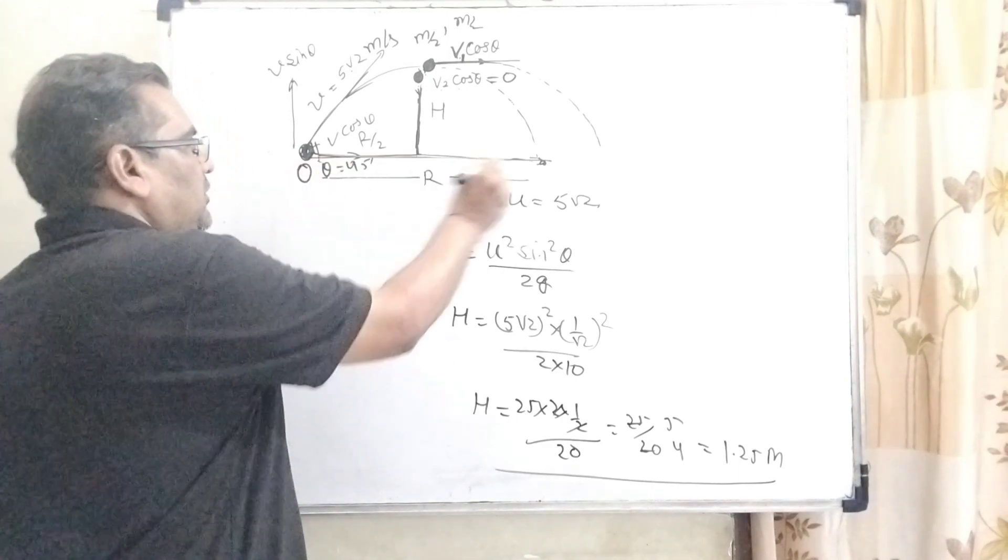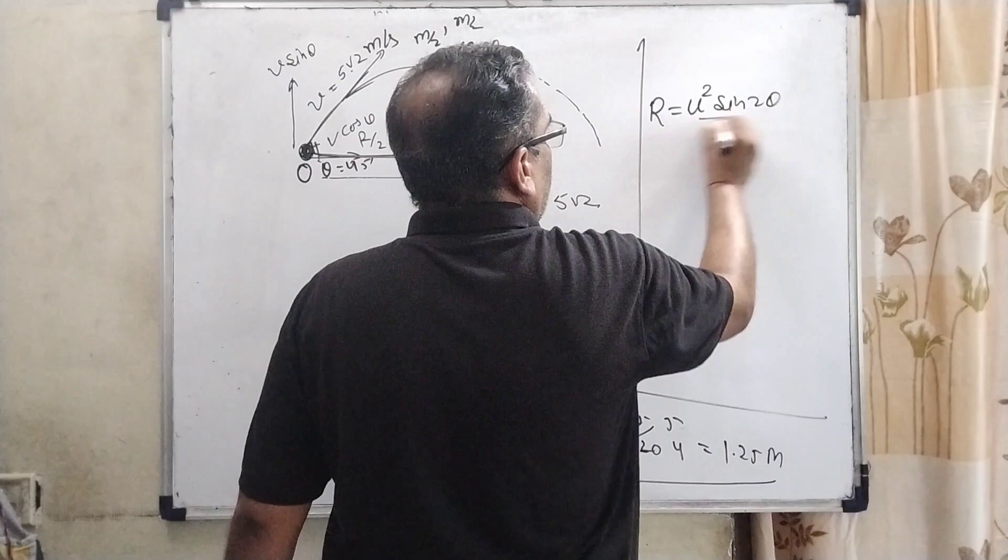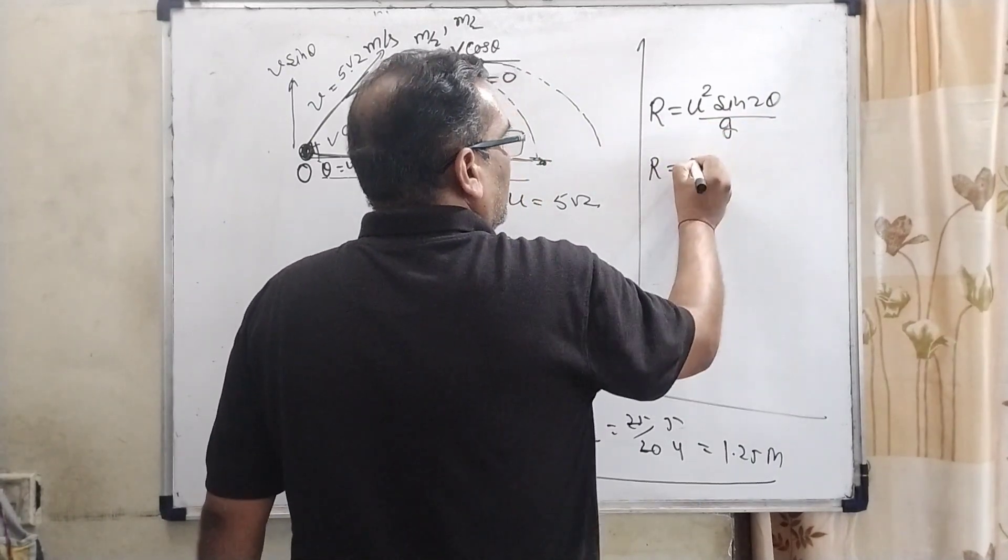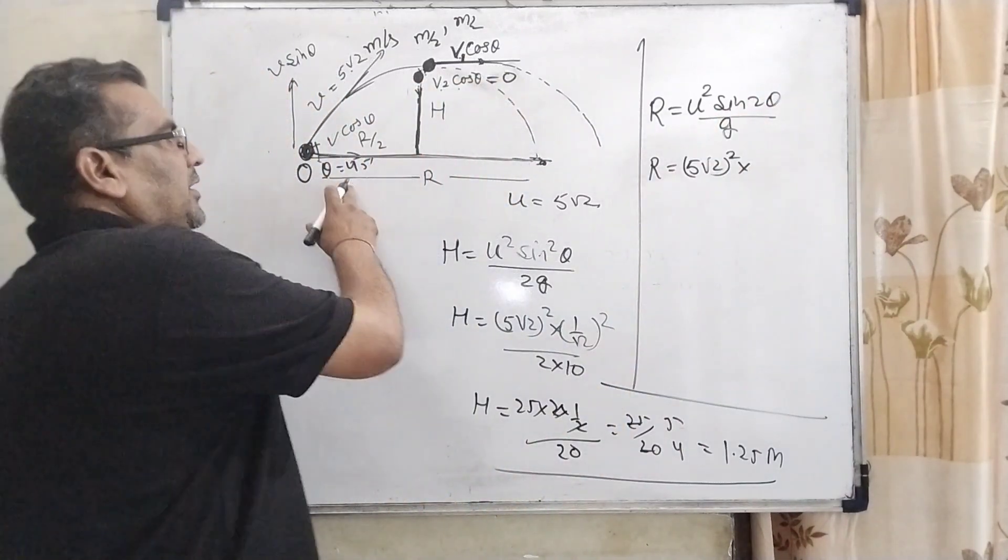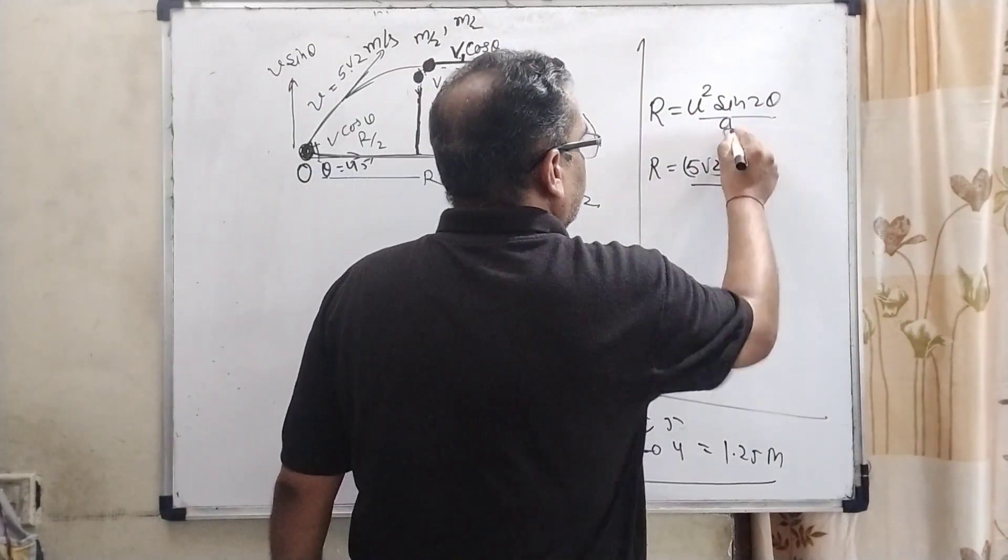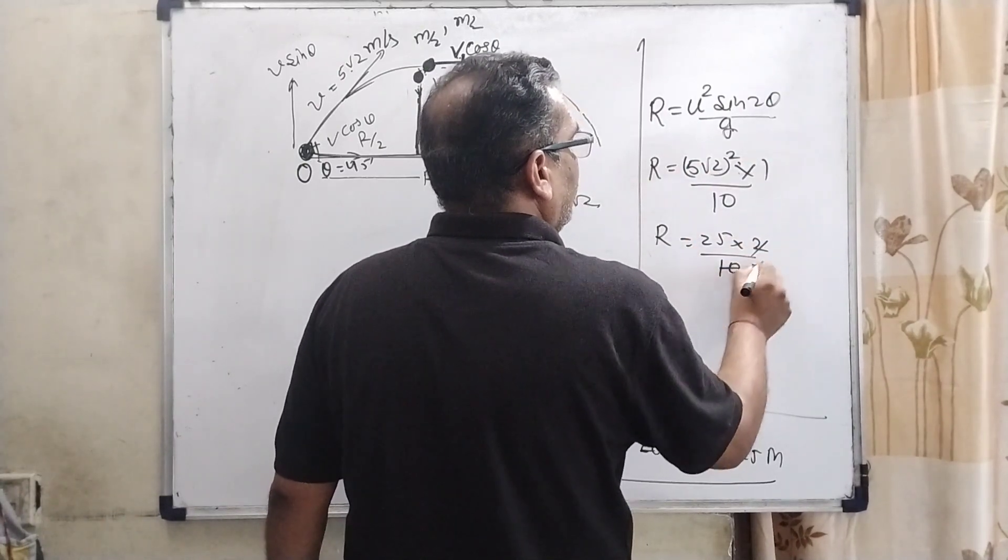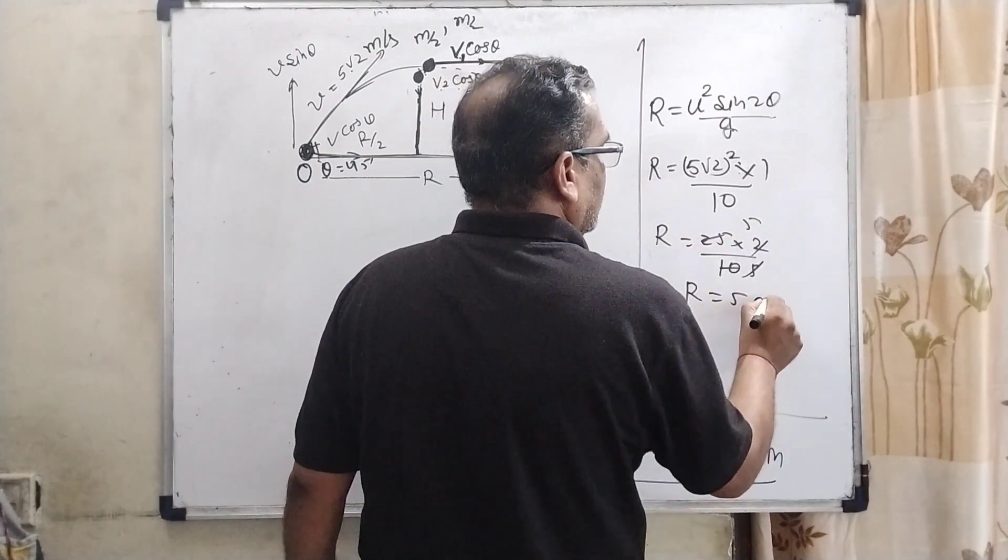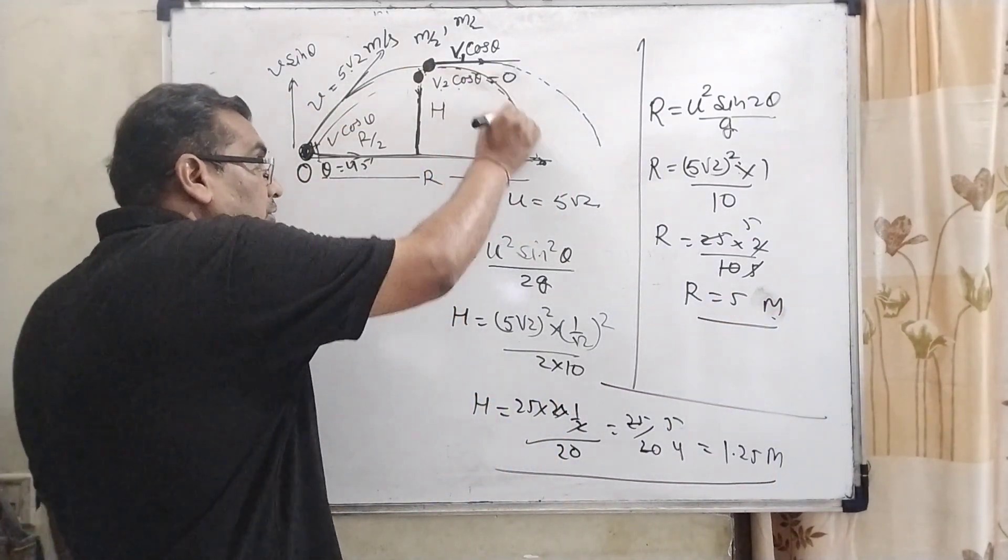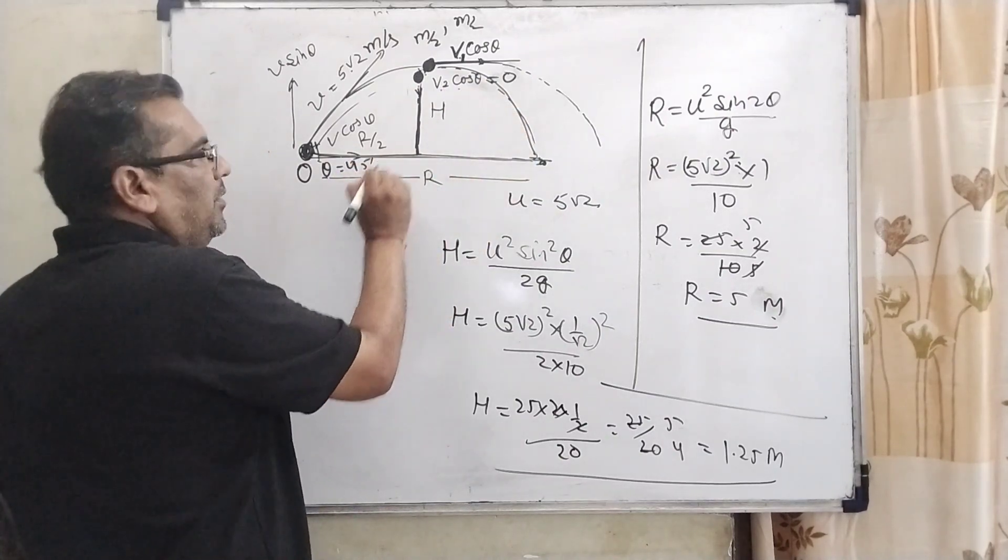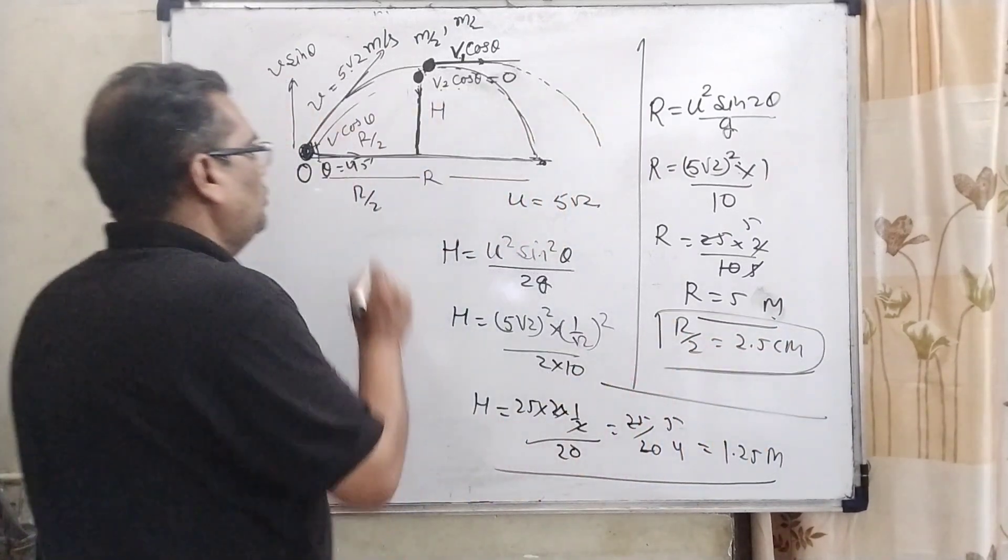Now we have to find out the total range. The formula of range R = u² sin 2θ / g. So here R = (5√2)². Here 45 degrees gives 2θ = 90, sin 90 = 1, and g = 10. Now R = 25 × 2 / 10. 2 × 5 = 10, 5 × 5 = 25. Then R = 5 meters. If it did not split, the range would be 5 meters. So half range R/2 = 2.5 meters.